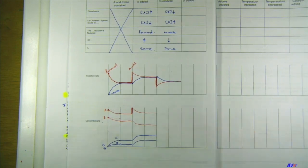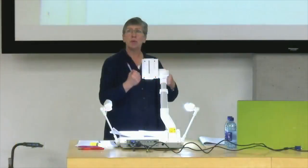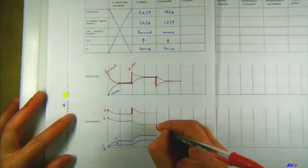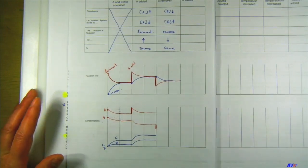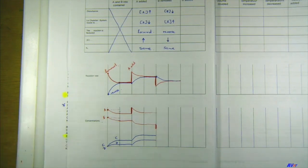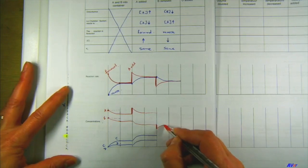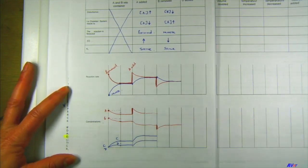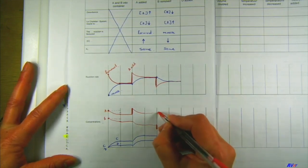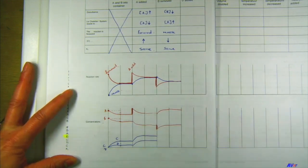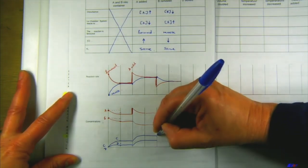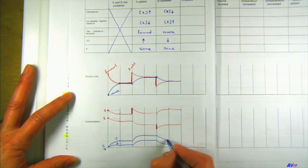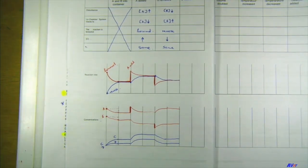On the concentration graph: at the moment B is removed, B drops down. Then the system makes new B via the reverse reaction, so B goes up a little. But if the reverse reaction is making A and B, it's also using C and D, so C and D go down. Reactants and products always do the opposite. Remember: always a bigger gradient first, then a smaller gradient.